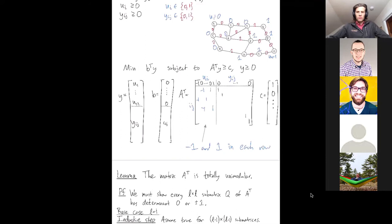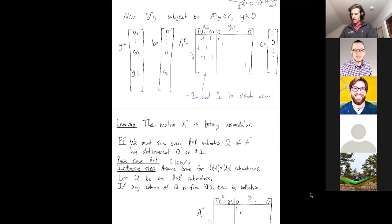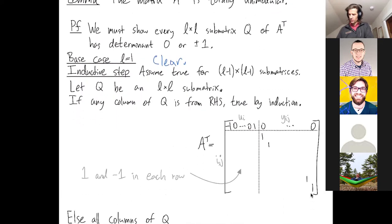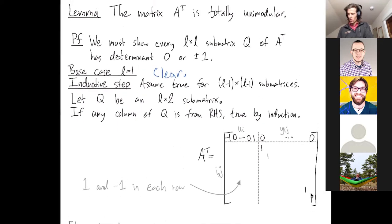Indeed, just like we did for Koenig's theorem, we're going to proceed by induction on L, the size of the square submatrix. The base case L equals one, I'll just say it's clear. You're looking at one by one submatrices, that's just entries, and every entry of this matrix by definition is either one, negative one, or zero. So the beauty of induction is now we can assume that it's true for smaller submatrices. Let me zoom in and we need to prove that it's true for submatrices of the next larger size. Okay, so let Q be any L by L submatrix.